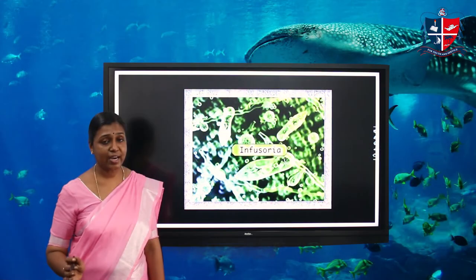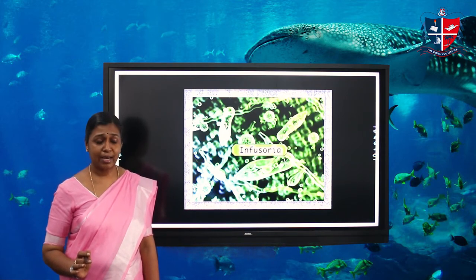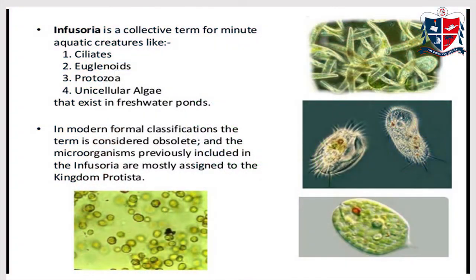What is infusoria? Infusoria is a group of microorganisms — it is a collection, a group of microorganisms including some algae, parameceums, ciliates, and euglenoids. It is a collective term for minute aquatic creatures like ciliates, euglenoids, protosoria, and unicellular algae. This group of microorganisms is known as infusoria, and it is used as feed for aquarium fishes, especially baby fish.